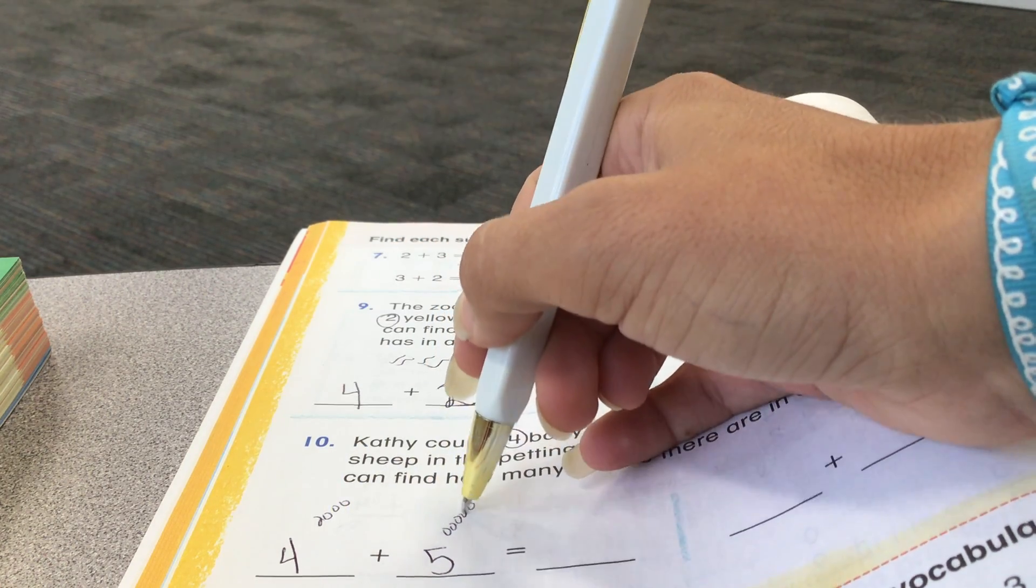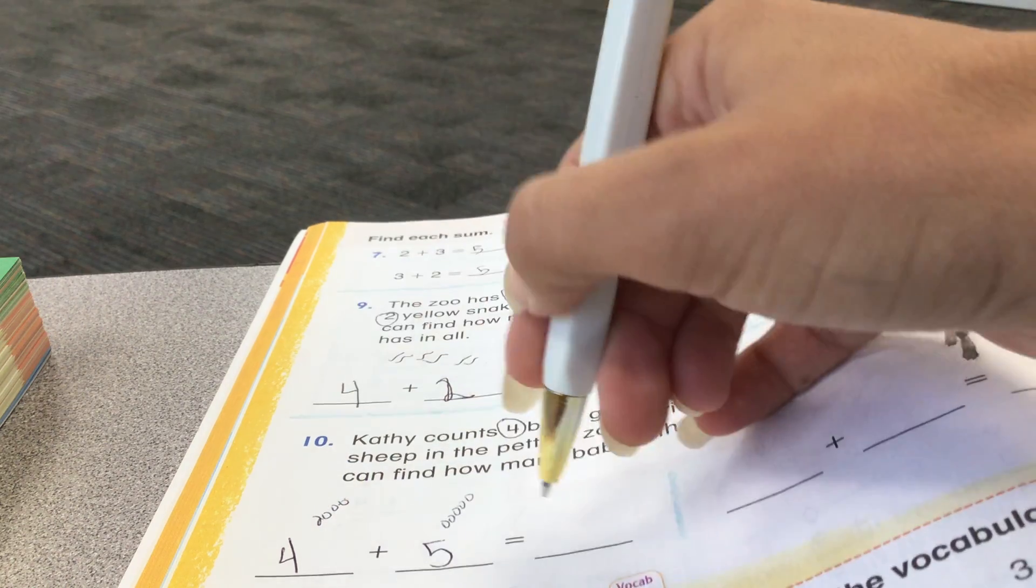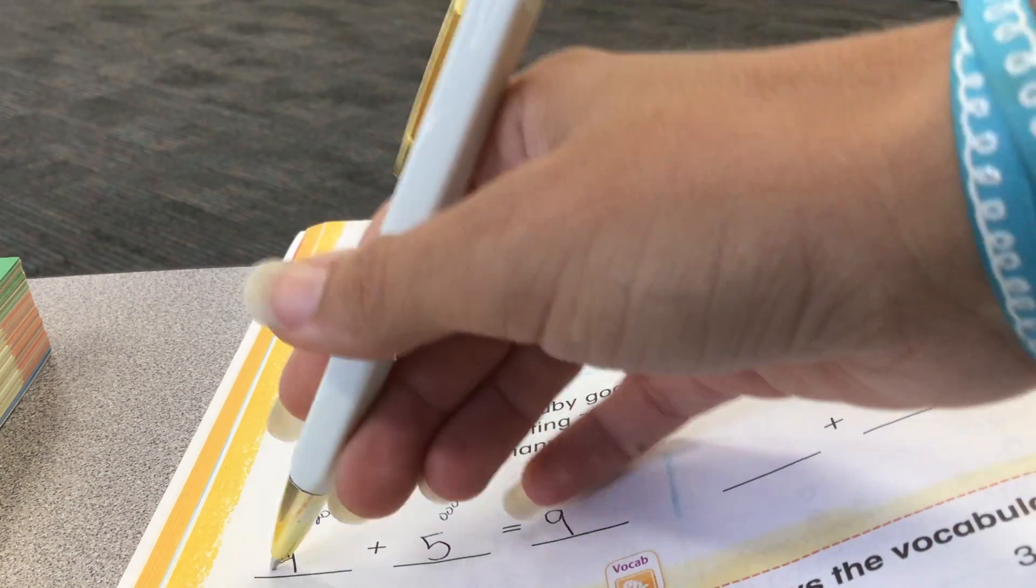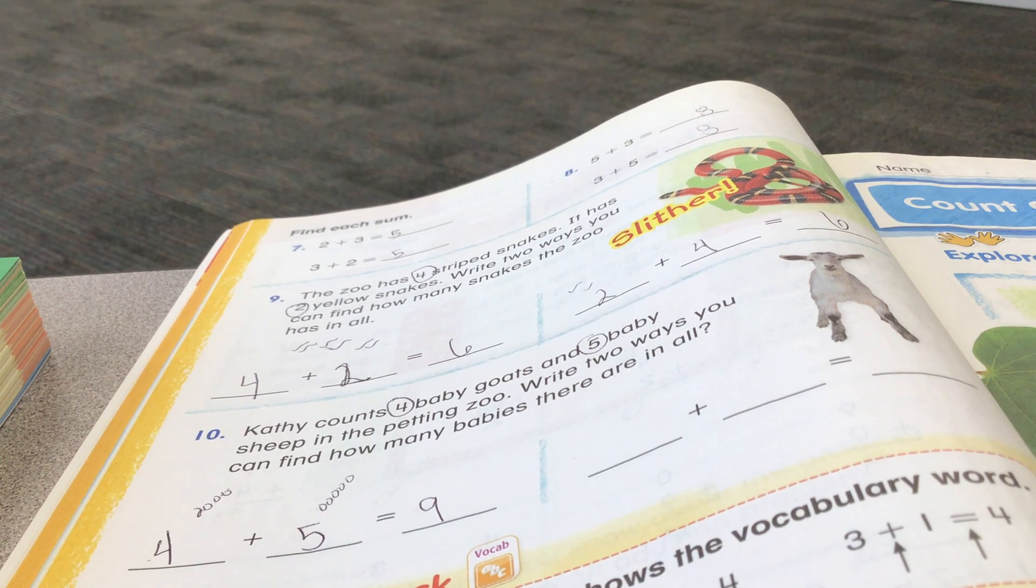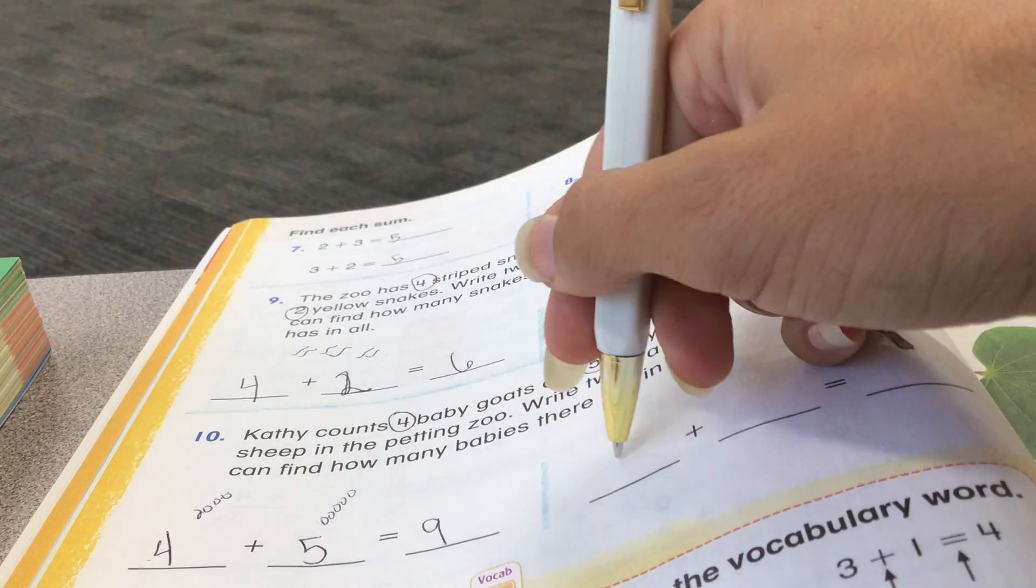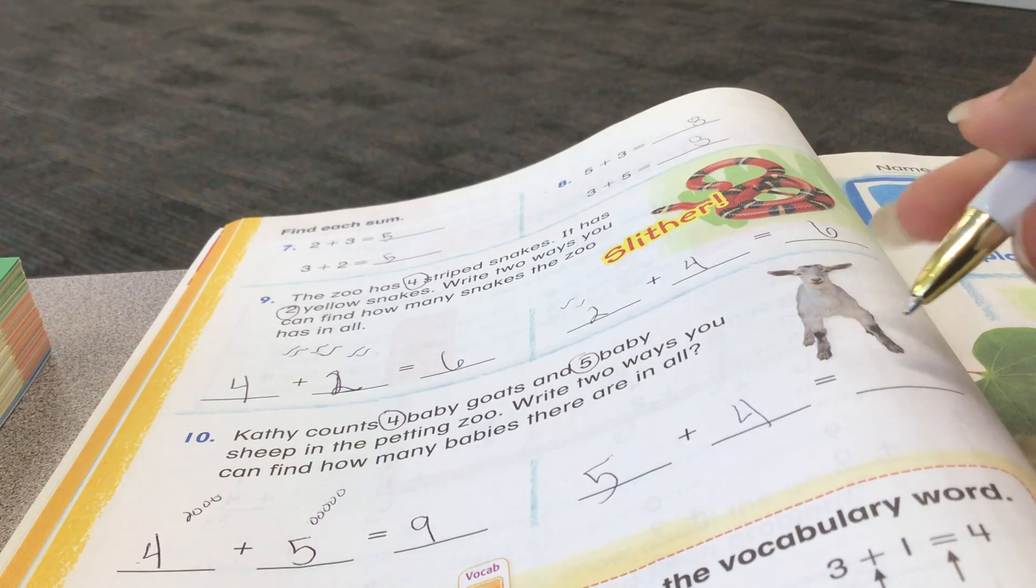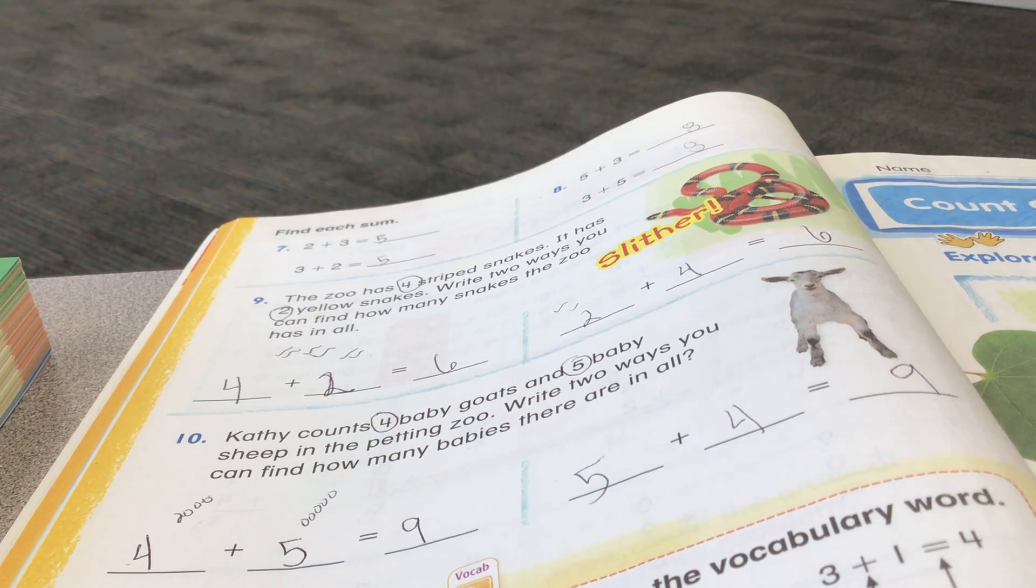So, I'm going to count them. 1, 2, 3, 4, 5, 6, 7, 8, 9. Now, remember, you can flip these numbers around. You still get the same answer. So, instead of starting with the goats, I'll start with the sheep. 5 sheep, 4 baby goats. And the answer is, there's still 9 babies.